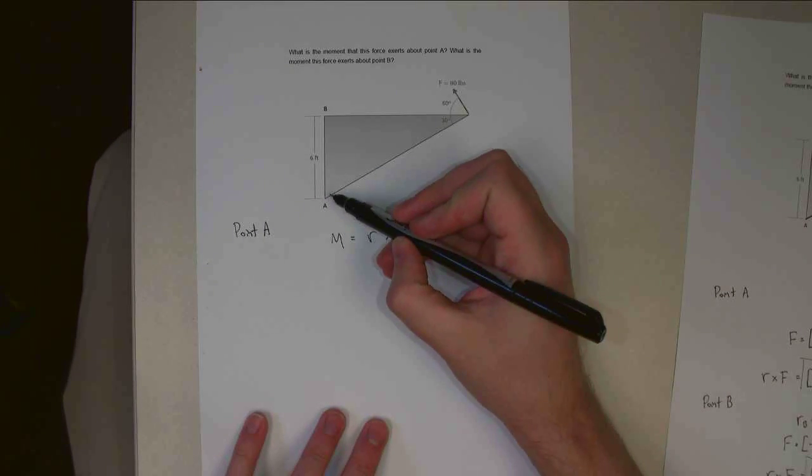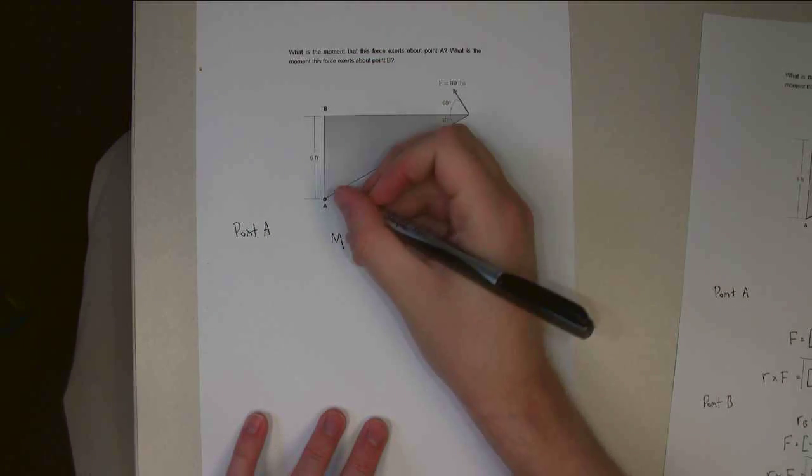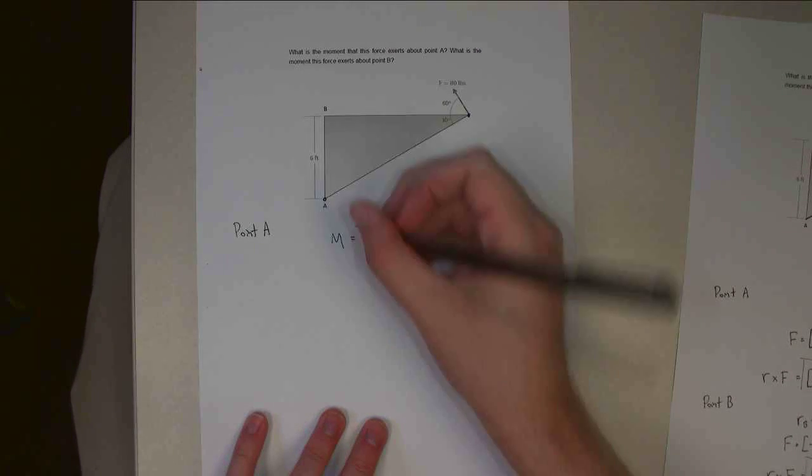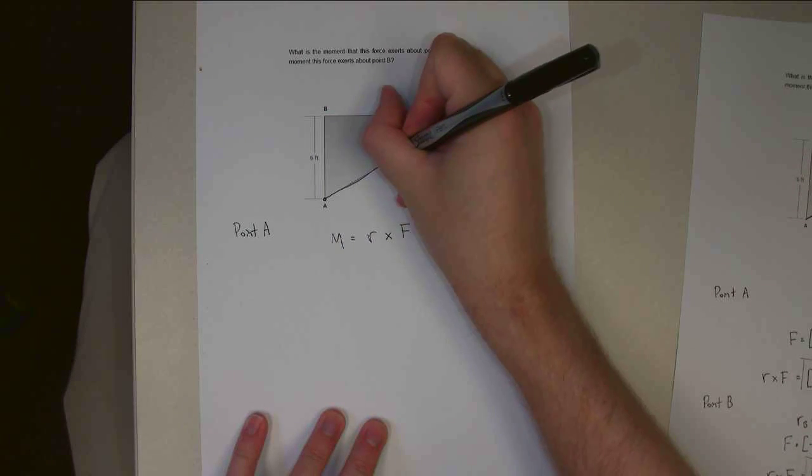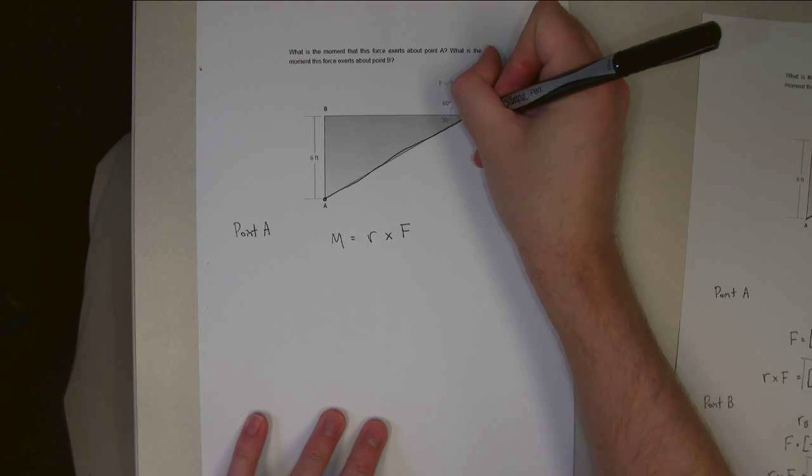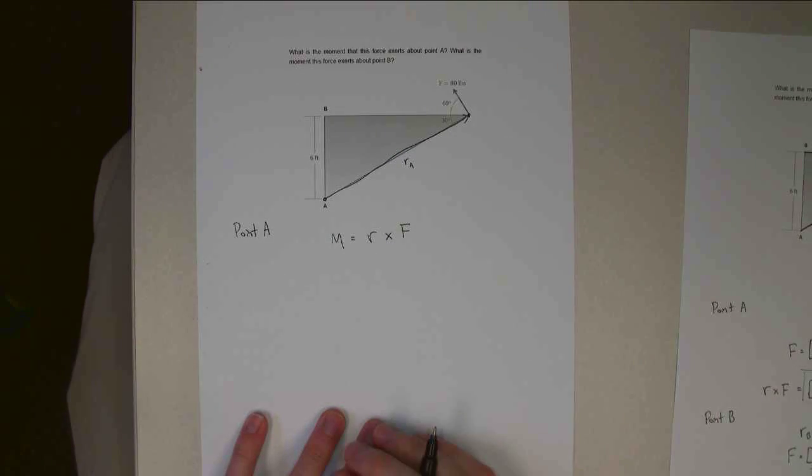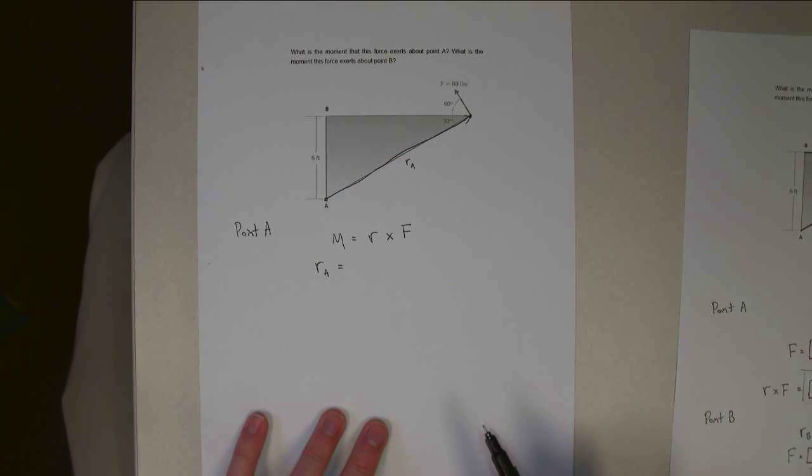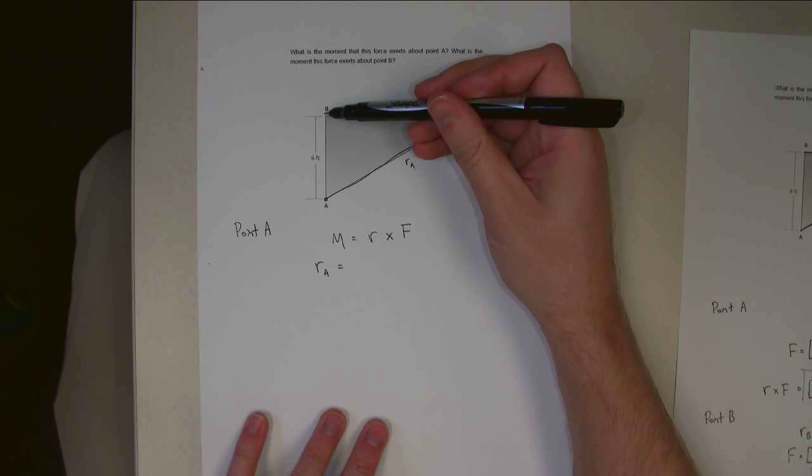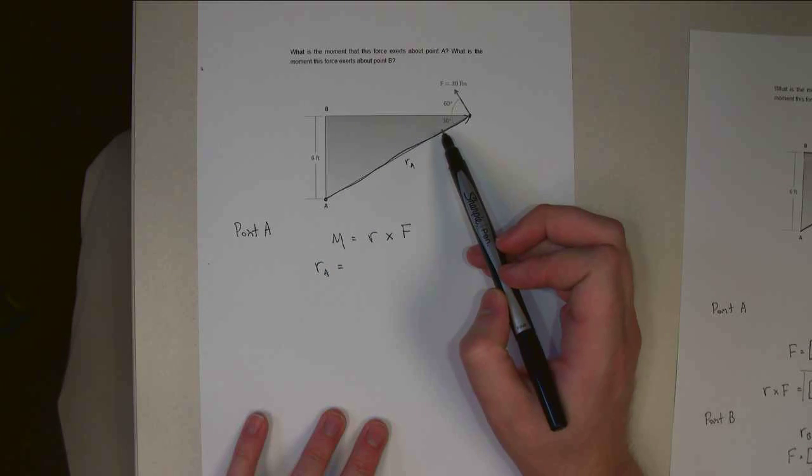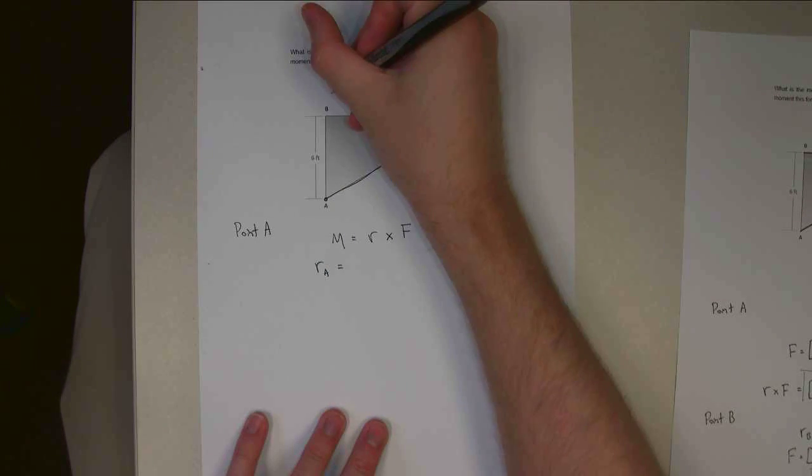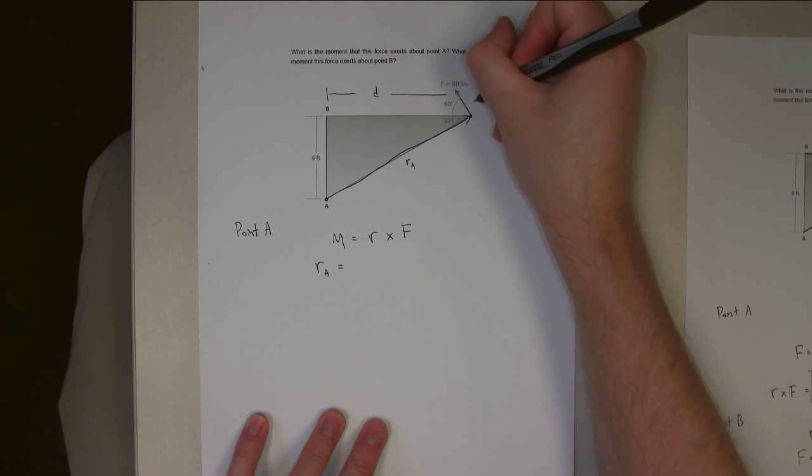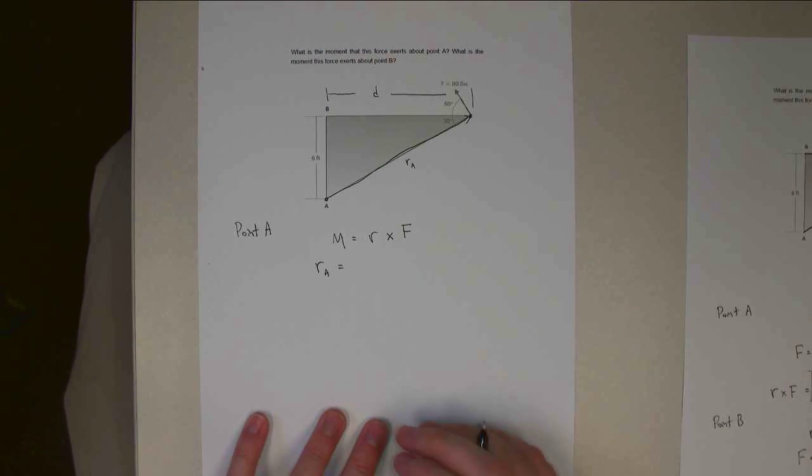The R vector, if I'm taking the moment about point A, I'm going from A up to this point where the force is applied. So this right here is my R vector, this is R sub A. R sub A, I'm going to go up 6 feet in the Y direction. It's a 30 degree angle, so I need to find this distance here, so D. And that's the horizontal distance.